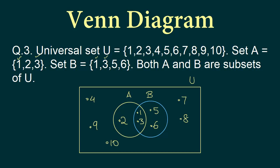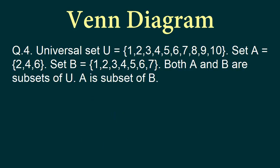Let's take a look at one last question. The universal set is again 1 through 10. Set A is {2, 4, 6} and set B has {1, 2, 3, 4, 5, 6, 7}. Both A and B are subsets of U. Notice that A is a subset of B — every element of A (2, 4, and 6) also belongs to B. So how are we going to draw the Venn diagram for this particular question?